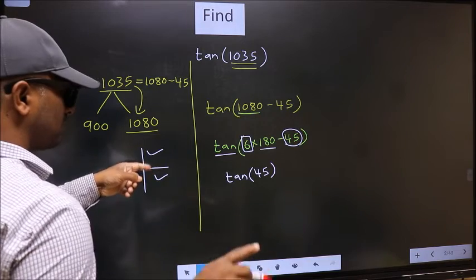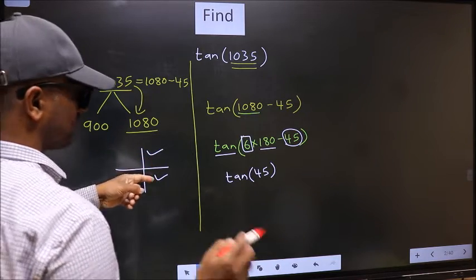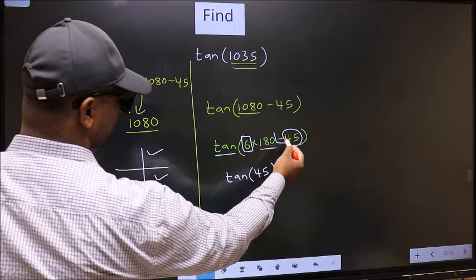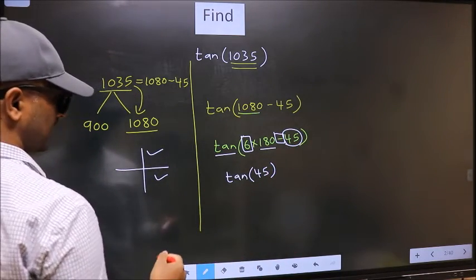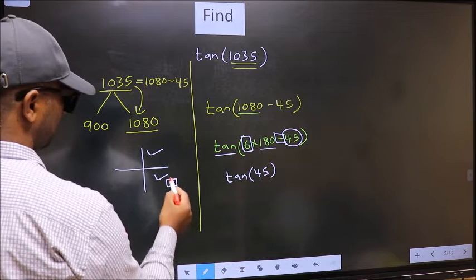So now to select the quadrant, we should look at this symbol. Here we have negative. That means the angle lies in the fourth quadrant.